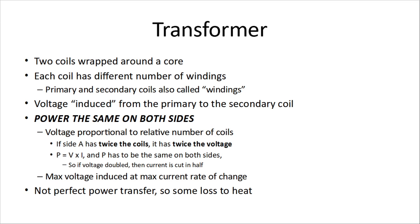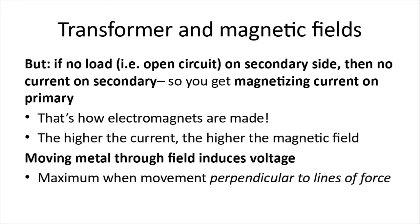Now, it's not a perfect power transfer, so you do get some loss to heat. This is the real world after all. Now, that rule about the coils and the ratio of voltage across the two coils and the ratio of current happens if we have a closed circuit. So we're actually doing something on both sides. But if there's no load, if there's an open circuit on the secondary side, in this case, our side with 12 volts, then there will be no current. But what you get as an effect is a magnetizing current on the primary. So the primary is going to look like a big magnet. And the higher the current on the primary side, the higher the magnetic field. If you move a metal piece of metal through the field, it'll induce some voltage in that metal. And the maximum is when the movement is perpendicular to the lines of force. Just something to remember.